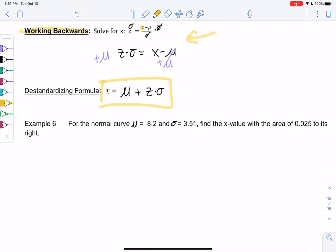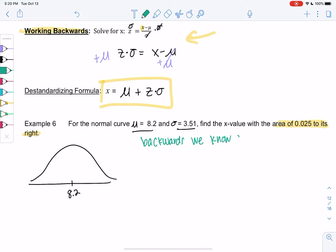So example 6. We have a normal curve with a mean of 8.2. So as soon as I hear normal curve, I put the mean in the middle and a standard deviation of 3.51. And we want to find the x value with an area of 0.025 to its right. So this is backwards because we know area.